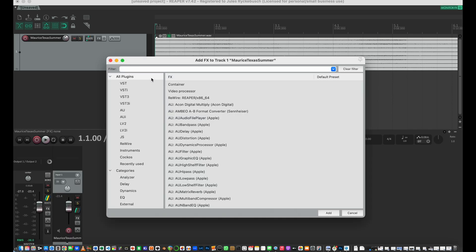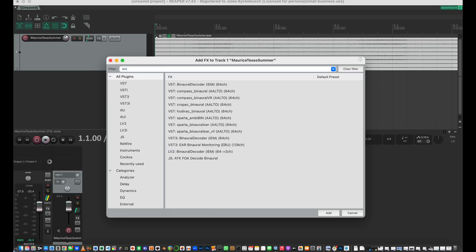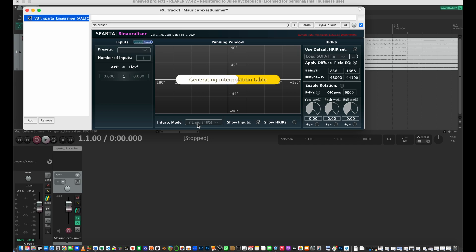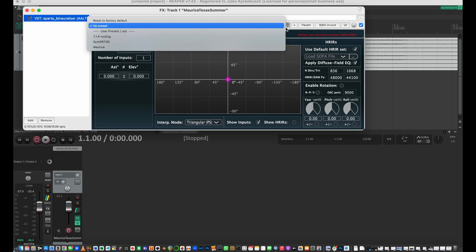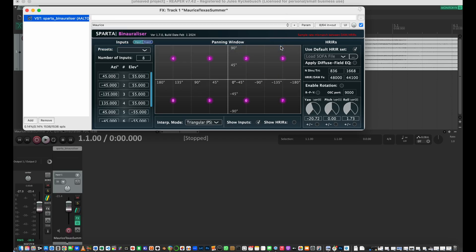So I'm going to bring up an effects window here and add a plugin for binaural. I'm adding the Sparta binauralizer. And I have a preset that I already set up here for Maurice, and that gives us eight inputs mapped out to binaural.